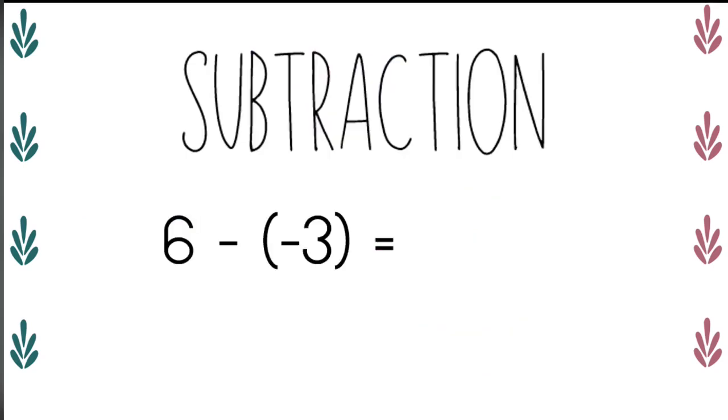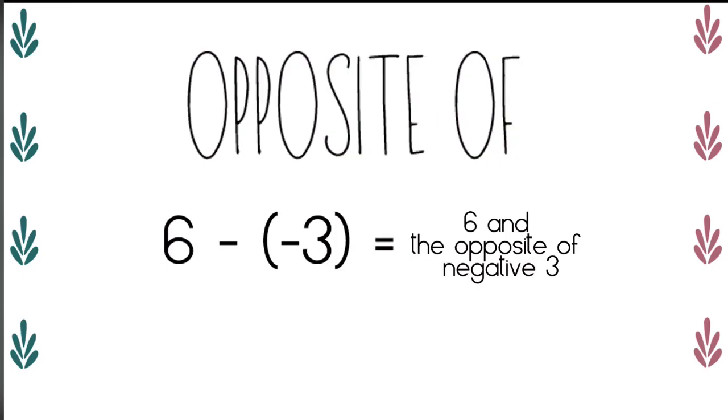So let's try this. Six minus negative three. Let's rewrite it. Six and the opposite of negative three. What is the opposite of negative three? It's positive three. Six plus three equals nine.